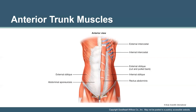The diaphragm is a dome-shaped sheet of muscle and fibrous tissue that separates the thoracic and abdominal cavities. Contraction of the diaphragm enlarges the thoracic cavity, which draws or sucks air into the lungs.